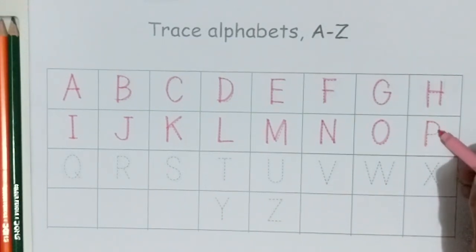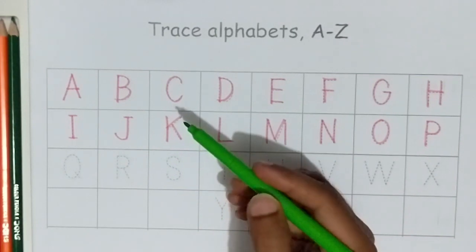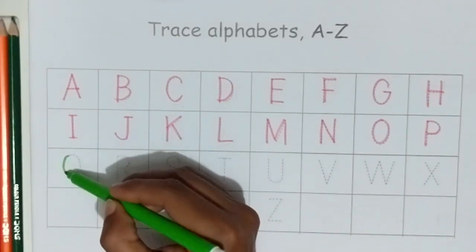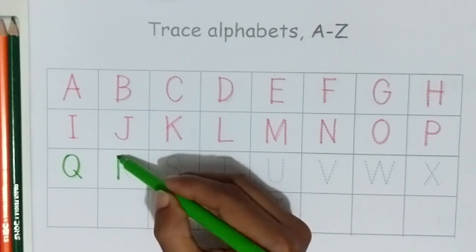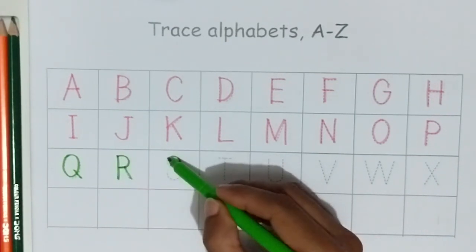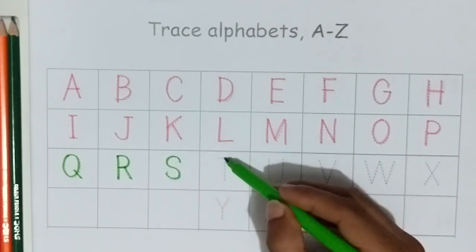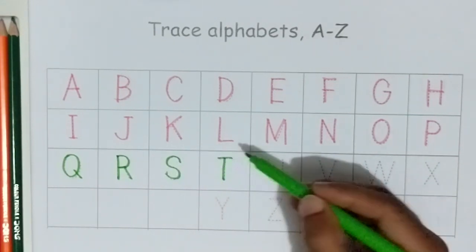V. V for parents. Green color. Q. Q for queen. R. R for red. S. S for sweet. T. T for teacher.